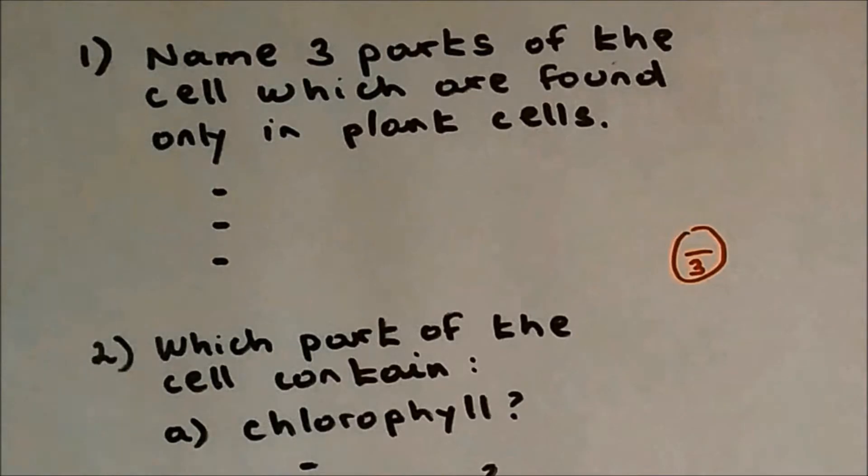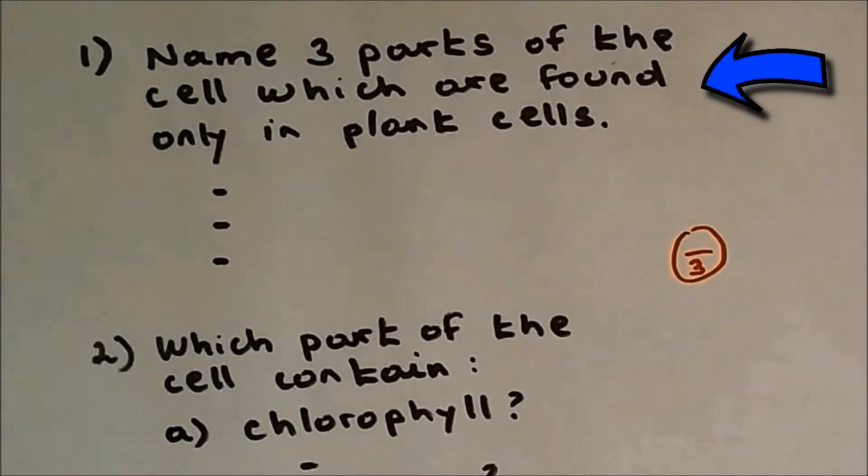So if you are ready, let's do this. Question number one. Name three parts of the cell which are found only in plant cells. The organelles or the parts of the cells which are found only in plant cells are cell wall, vacuole and chloroplast.